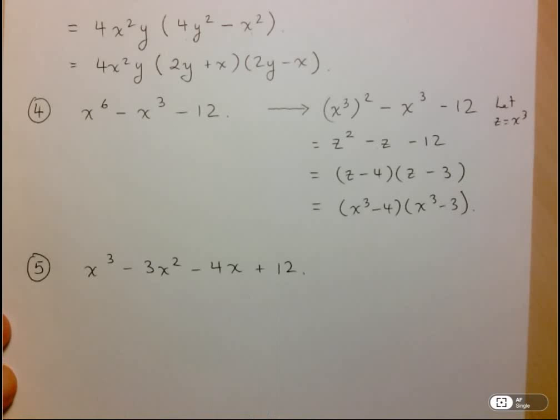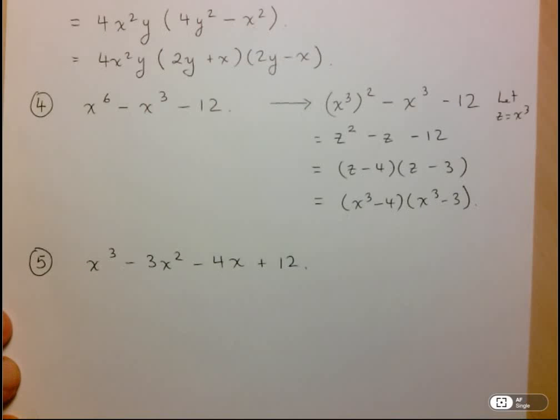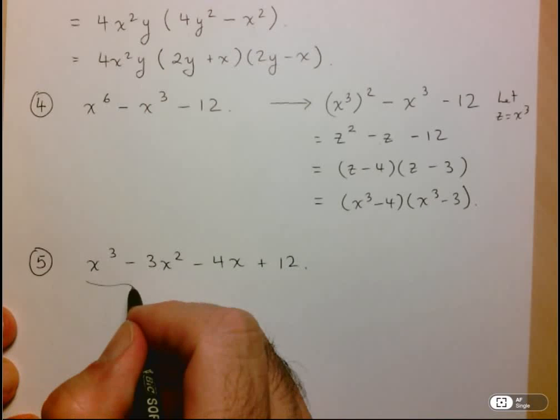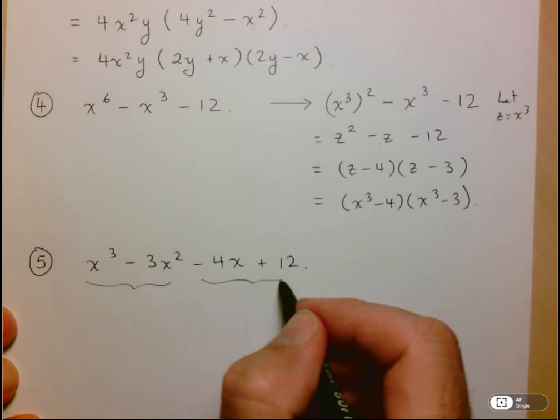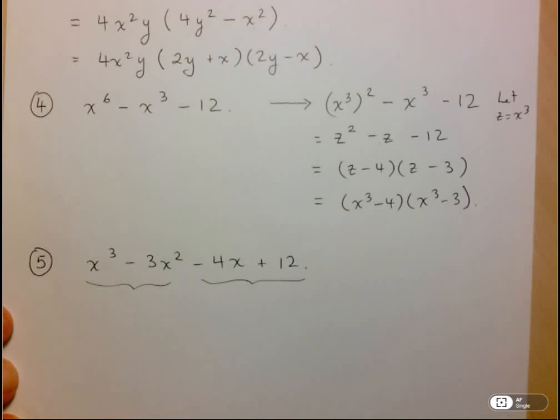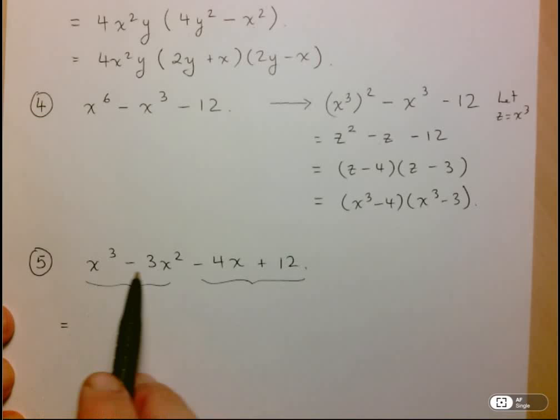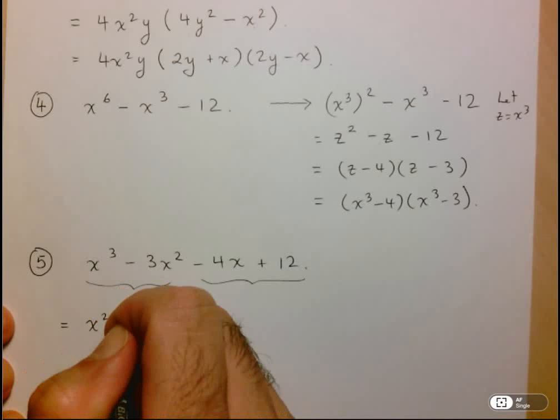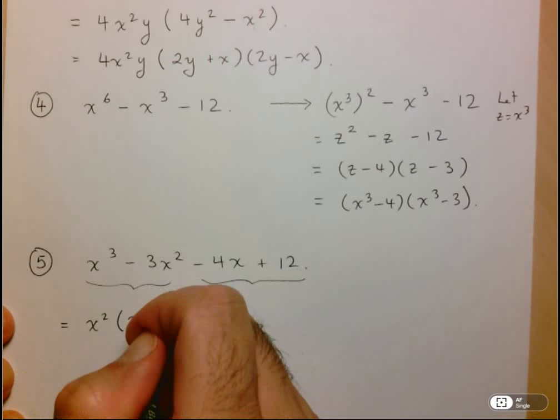So the trick to factoring these polynomials with four terms is to actually group them into two pairs of two. And we notice here that when you look at these first two terms, they have a common factor, common factor of x squared. So what are we left with here? We're left with x - 3.